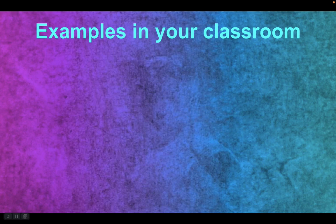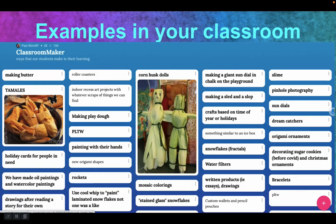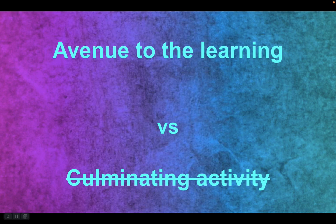You're probably already doing some making in your classroom. Teachers make roller coasters, make butter, make tamales. Food is a great thing — you're studying cultures, histories, societies, and they all have different food. They also have different jewelry. Pinhole photography, sundials, dream catchers, imagery, origami ornaments, rockets — there are so many ways that we already do it. But here's an important distinction: is the making the avenue to the learning, our vehicle through which we're learning, or is it a culminating activity? In maker ed, it's not a culminating activity — it is how we do our learning. It's not just a project at the end if we get time. That might be a twist you've got to make.